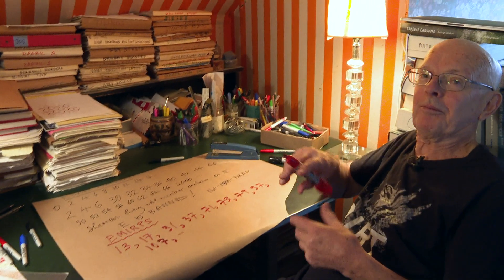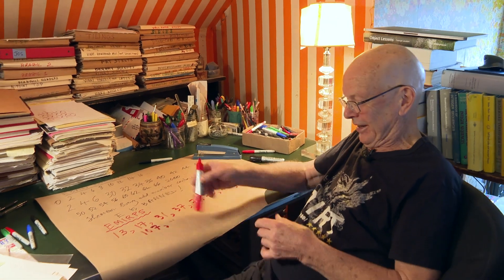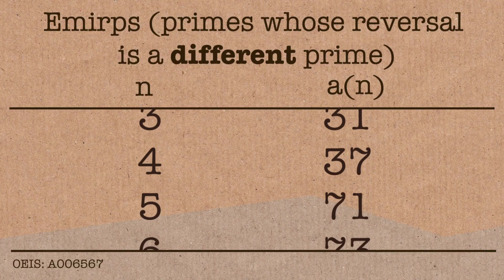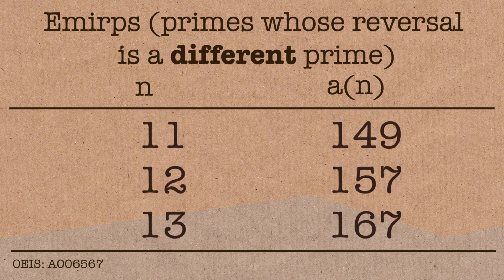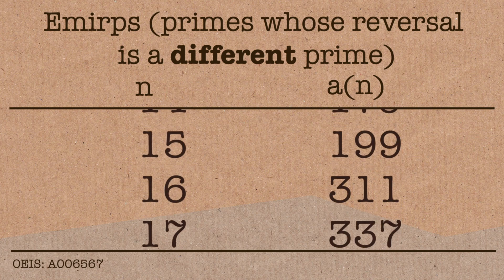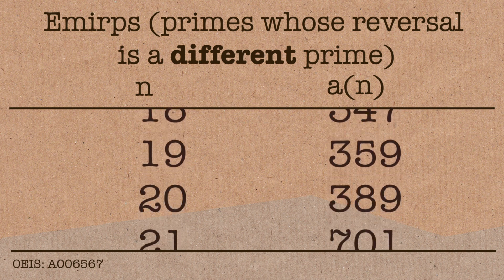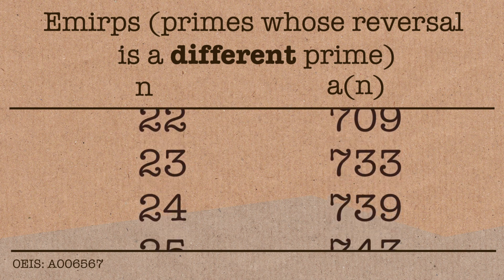Well, obviously they're primes. And if you look at the name, you'll see it's prime backwards. So these are the primes which, when you read them backwards, are still primes, but different primes. So we don't put down 11 because it's palindromic. These are primes which, when you read it backwards, gives you a different prime.